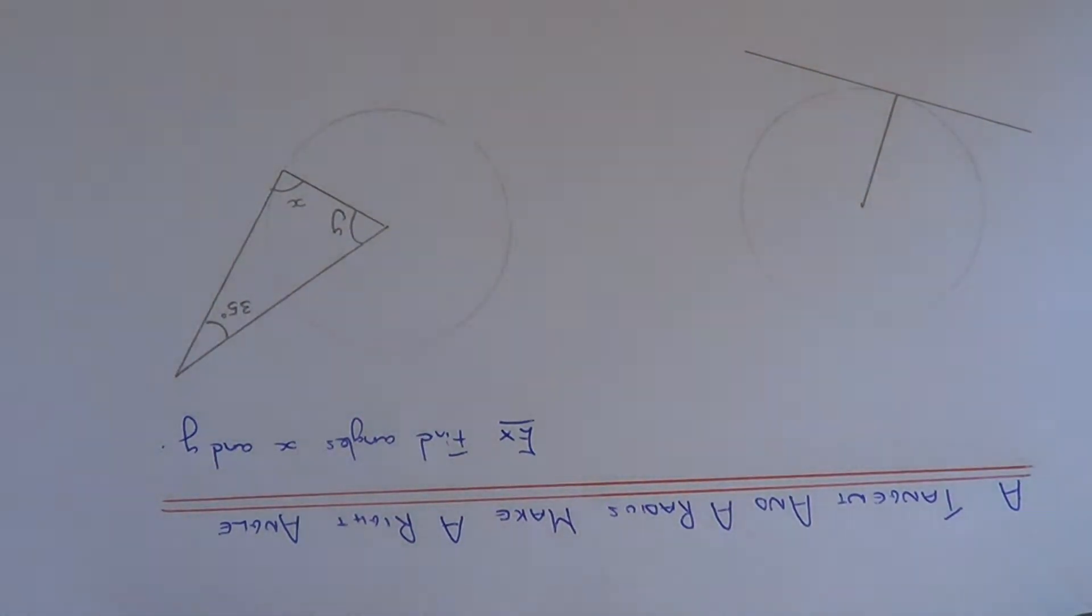Hi, today we're going to look at the circle theorem that a tangent and a radius make a right angle at the point of contact.